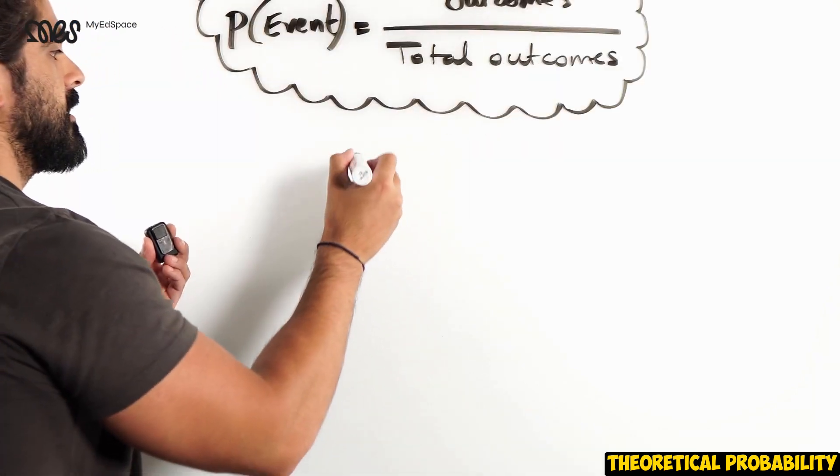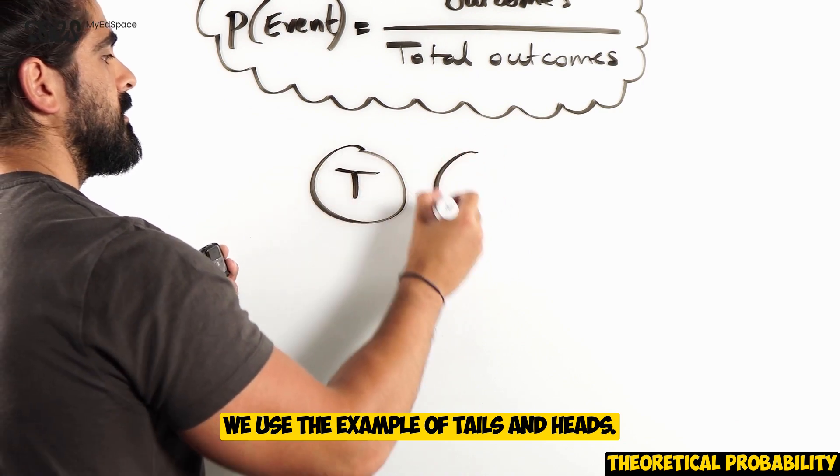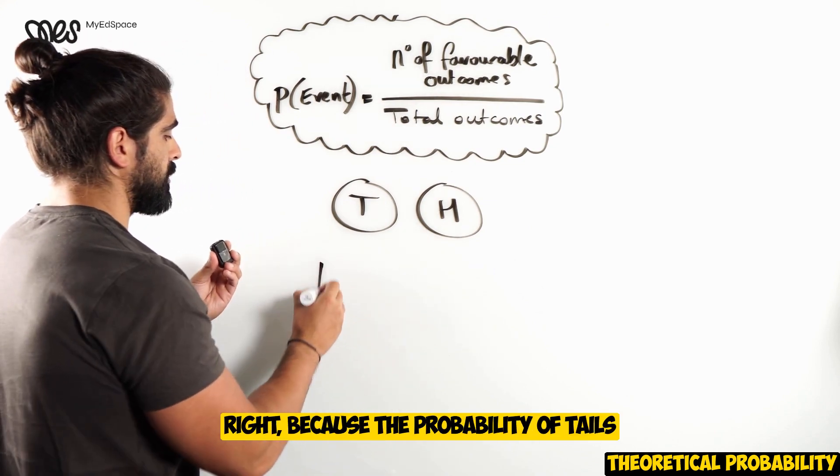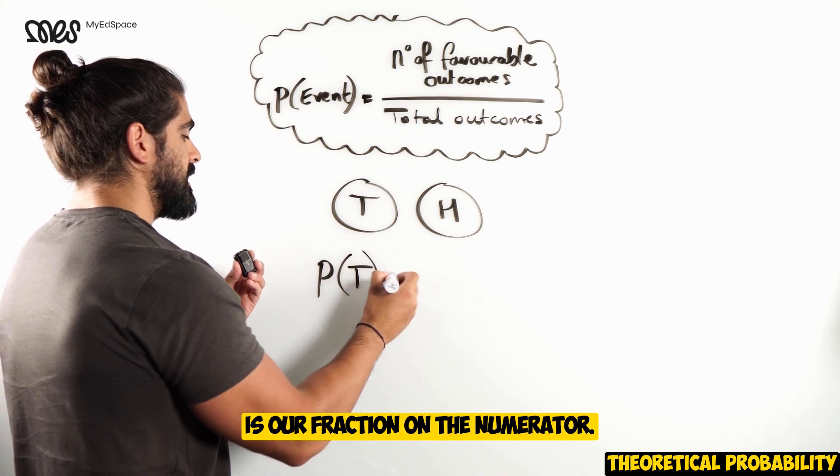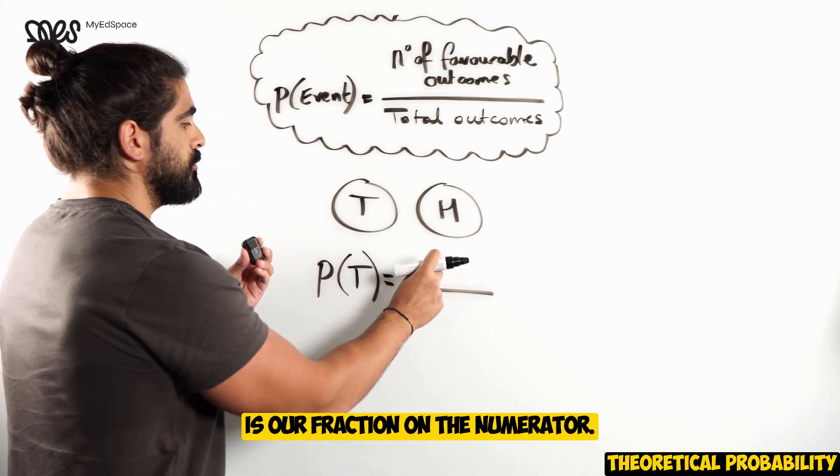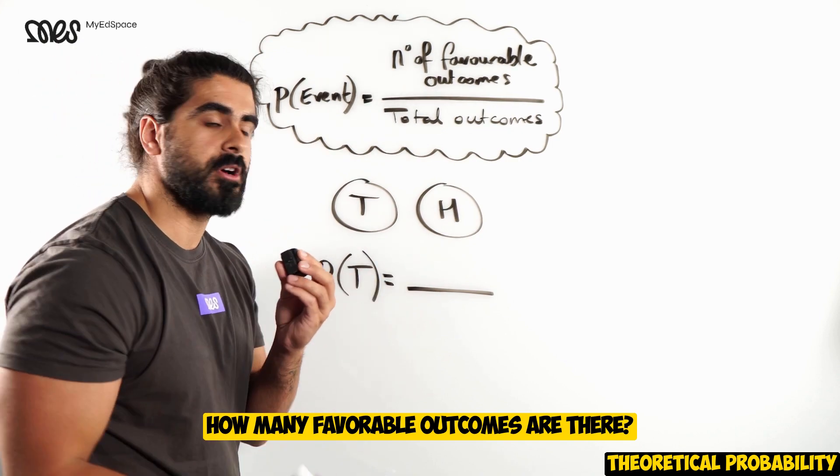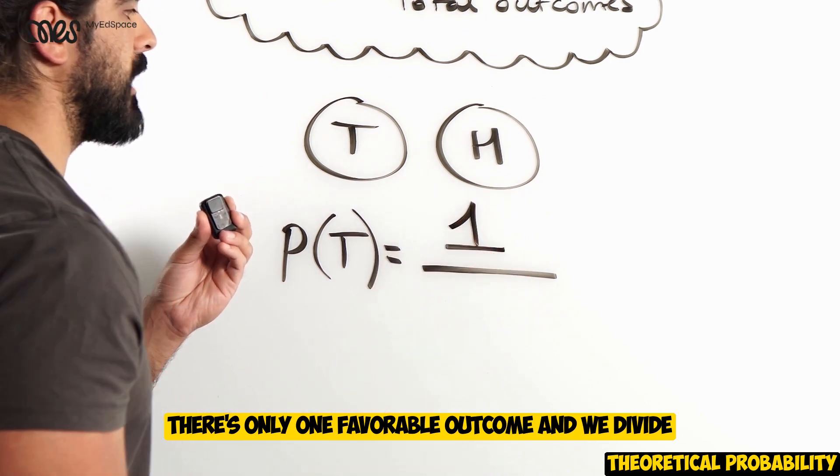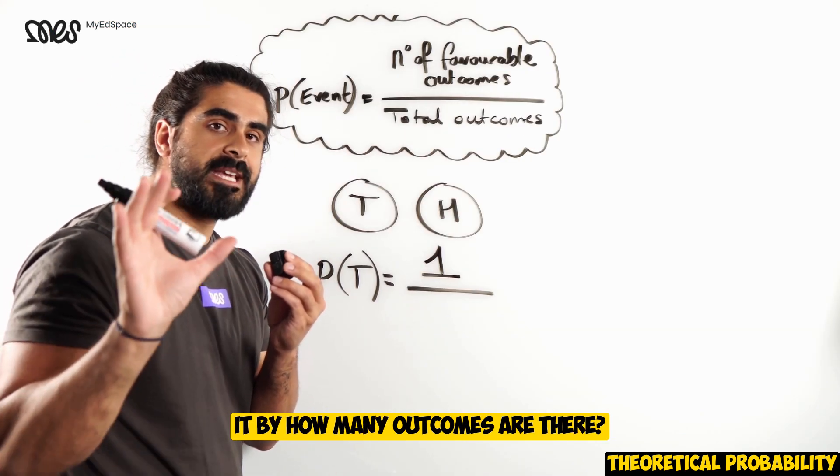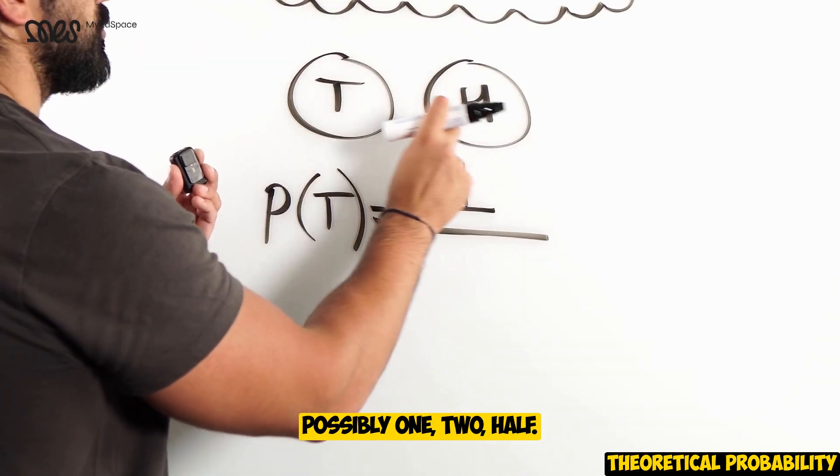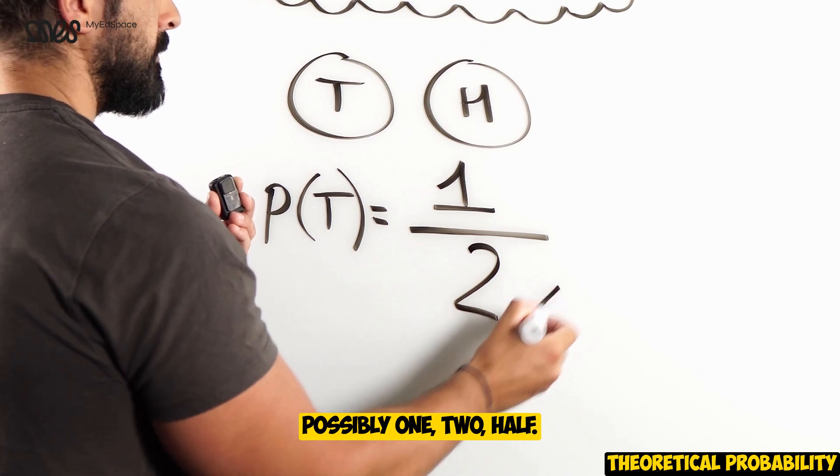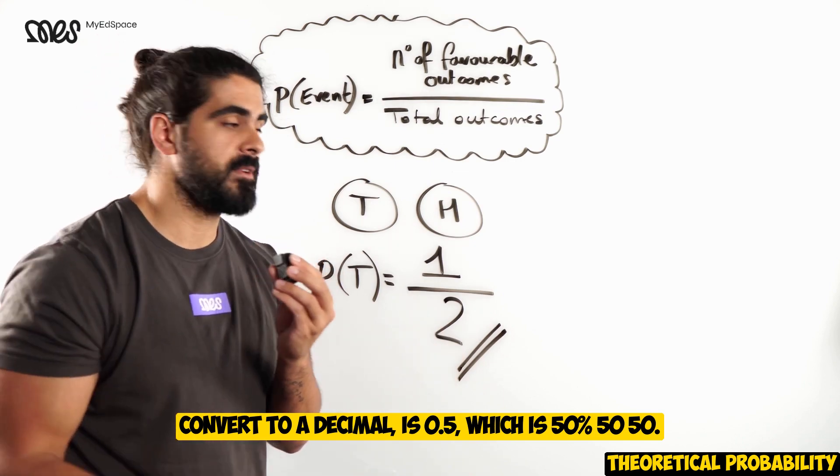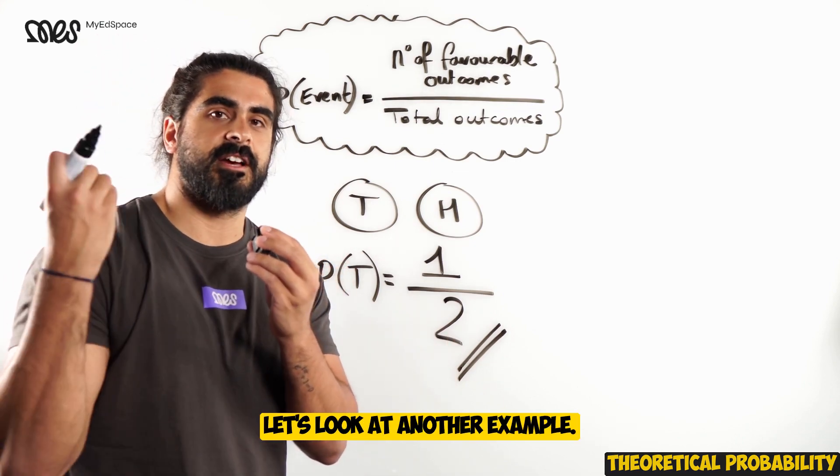Let's look at a coin. We use the example of tails and heads. And I said, what's the probability of tails? We said 50-50, right? Because the probability of tails is our fraction. On the numerator, how many favorable outcomes are there? Well, I want tails. There's only one favorable outcome. And we divide it by how many outcomes are there possibly? One, two, half. The probability of landing tails is one half, which if you convert to a decimal is 0.5, which is 50%, 50-50.